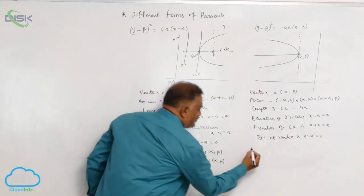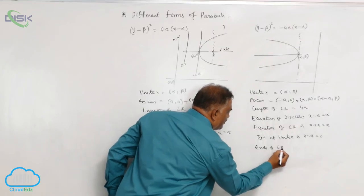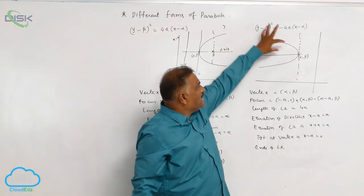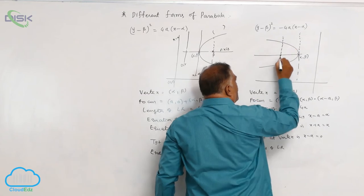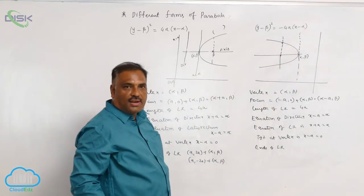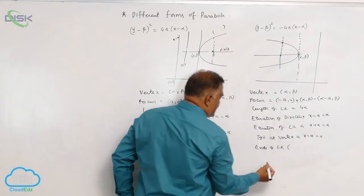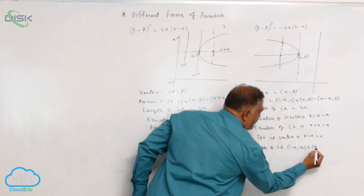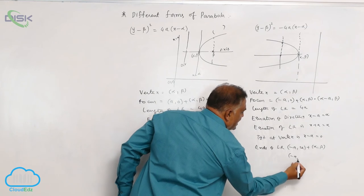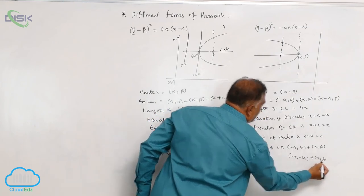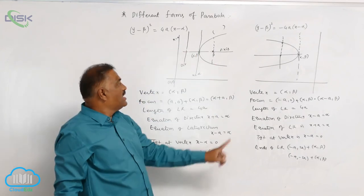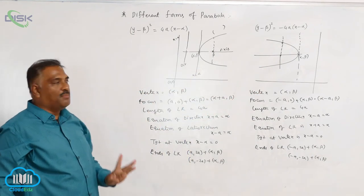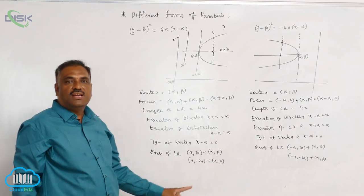Now, ends of latus rectum — previously, we know that it is (a, 2a) and (a, −2a). Since it is now in the third and fourth quadrant, the ends of latus rectum become (−a + α, 2a + β) and (−a + α, −2a + β). The speciality of these two curves is that the axis of the parabola is always parallel to the x-axis. Please remember: the axis of the parabola is always parallel to the x-axis.